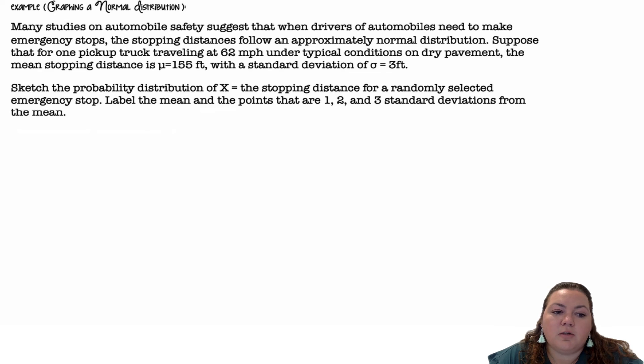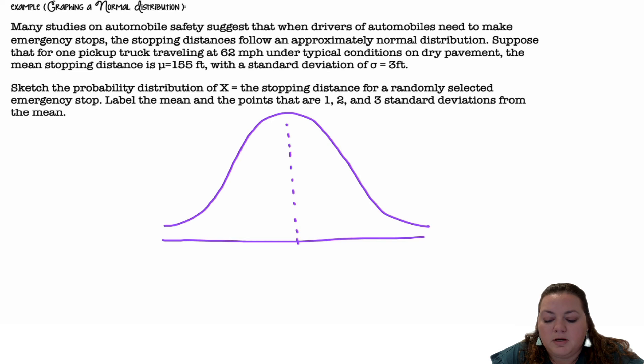Graphing a normal distribution. Many studies on automobile safety suggest that when drivers of automobiles need to make emergency stops, the stopping distance follows an approximately normal distribution. Suppose that for one pickup truck traveling at 62 miles per hour under typical conditions on dry pavement, the mean stopping distance is 155 feet with a standard deviation of 3 feet. So sketch the probability distribution of x, the stopping distance from a randomly selected emergency stop, label the mean and the points that are 1, 2, and 3 standard deviations from the mean. So here's my normal distribution. I'm going to go and put a line down the center. This is a normal distribution with a mean of 155 and a standard deviation of 3. That's the notation we're going to put always when we draw them. So we're going to start with 155 in the center.